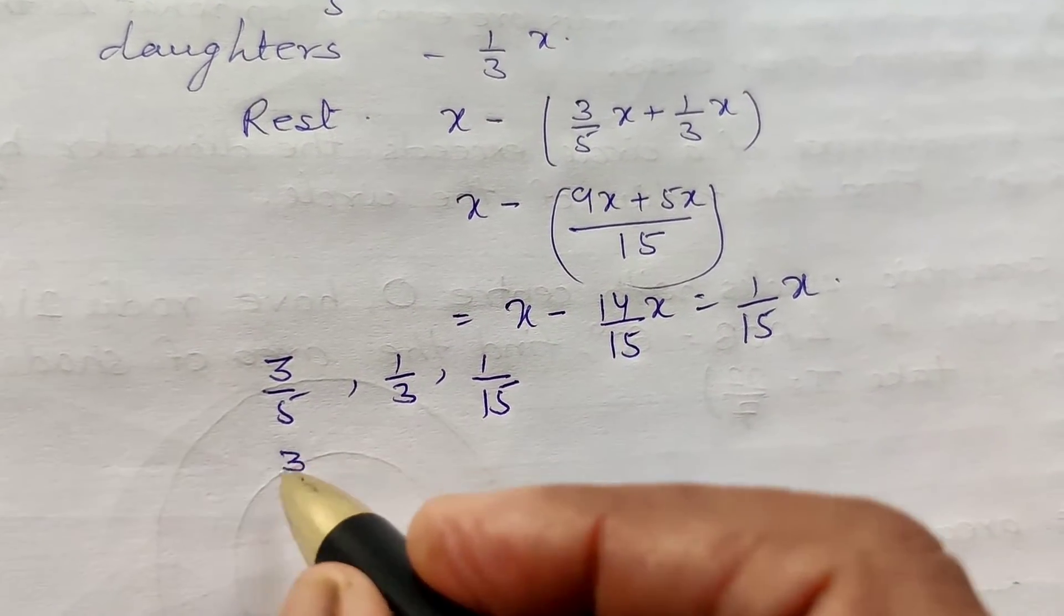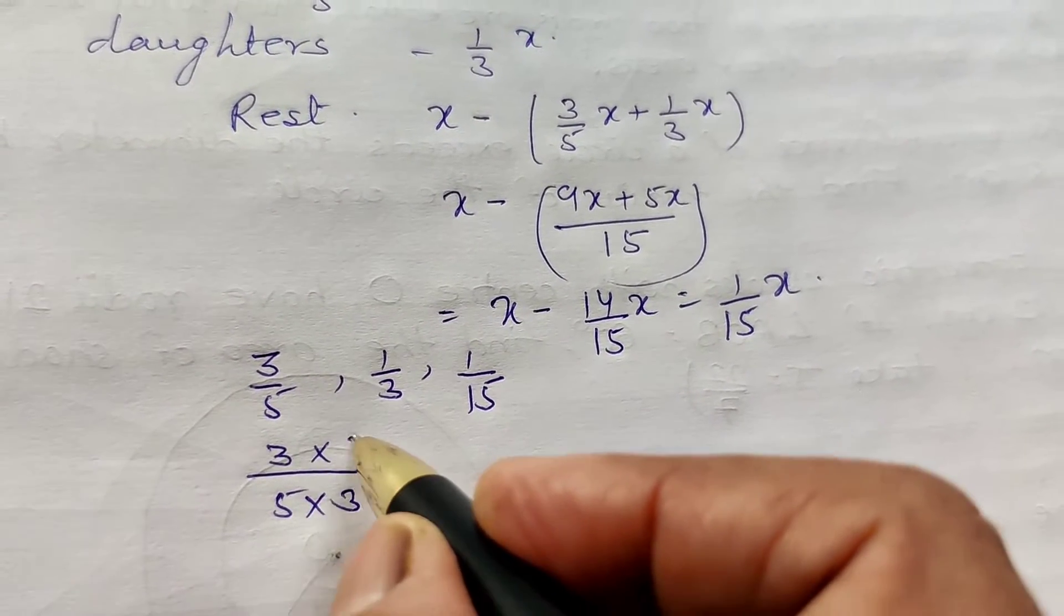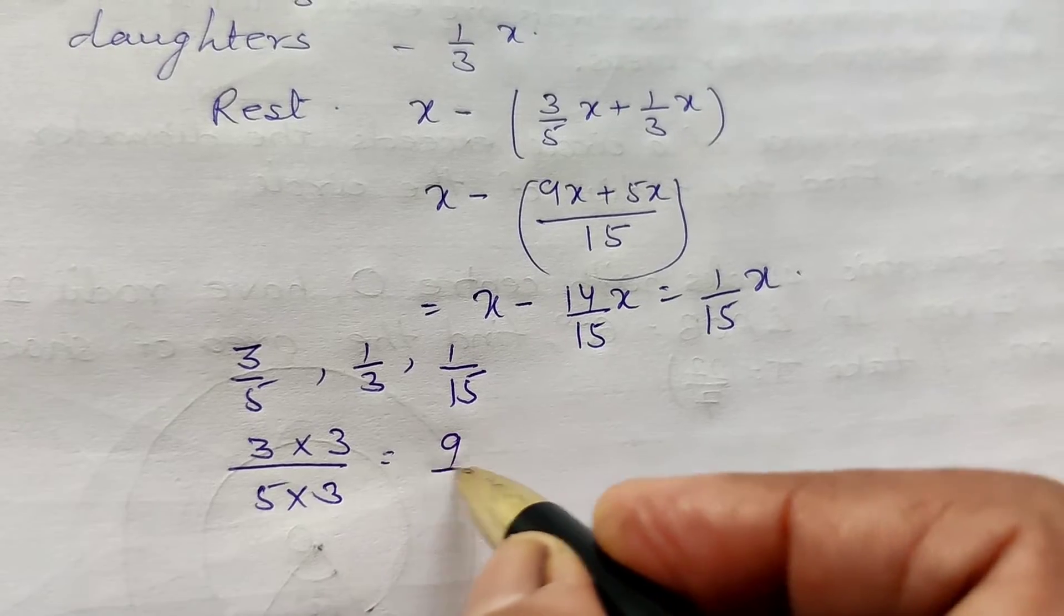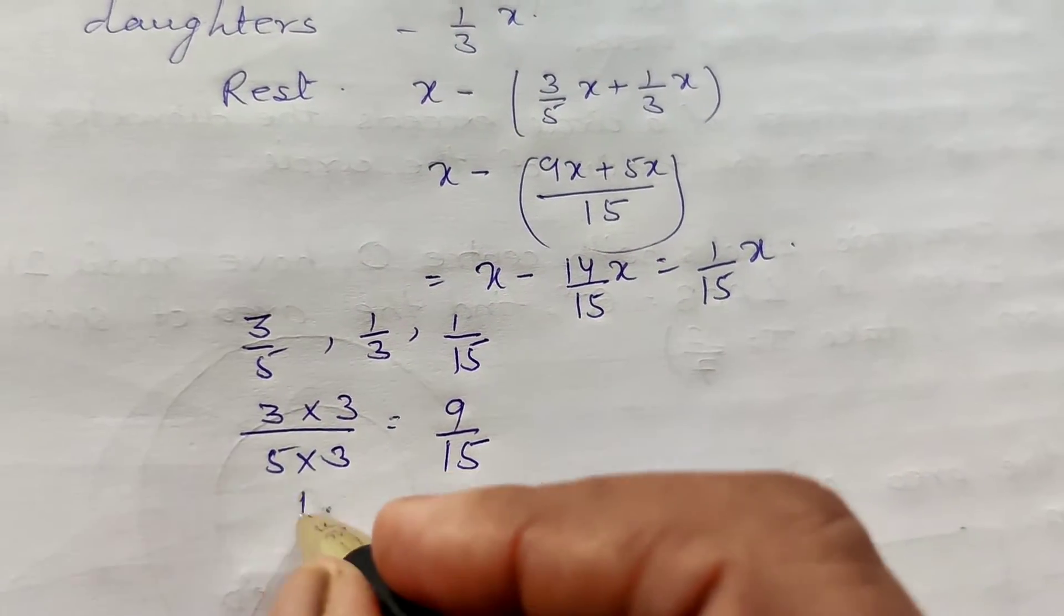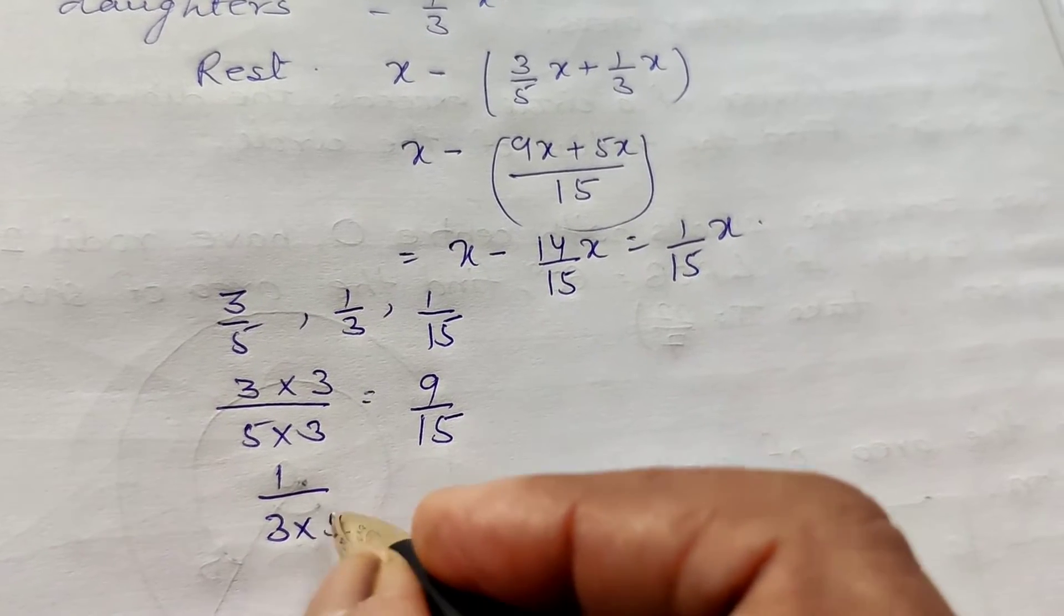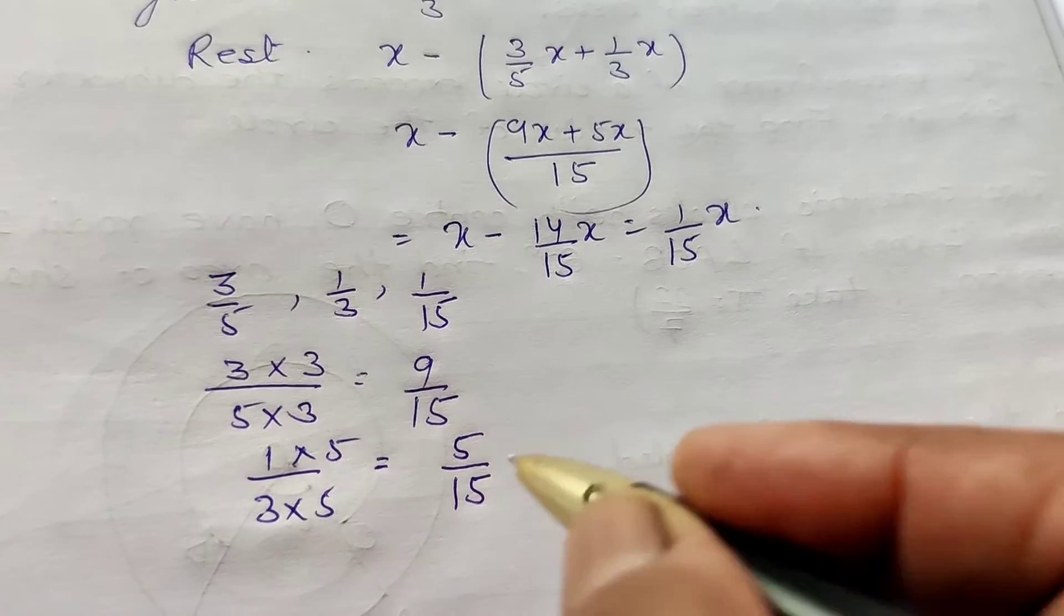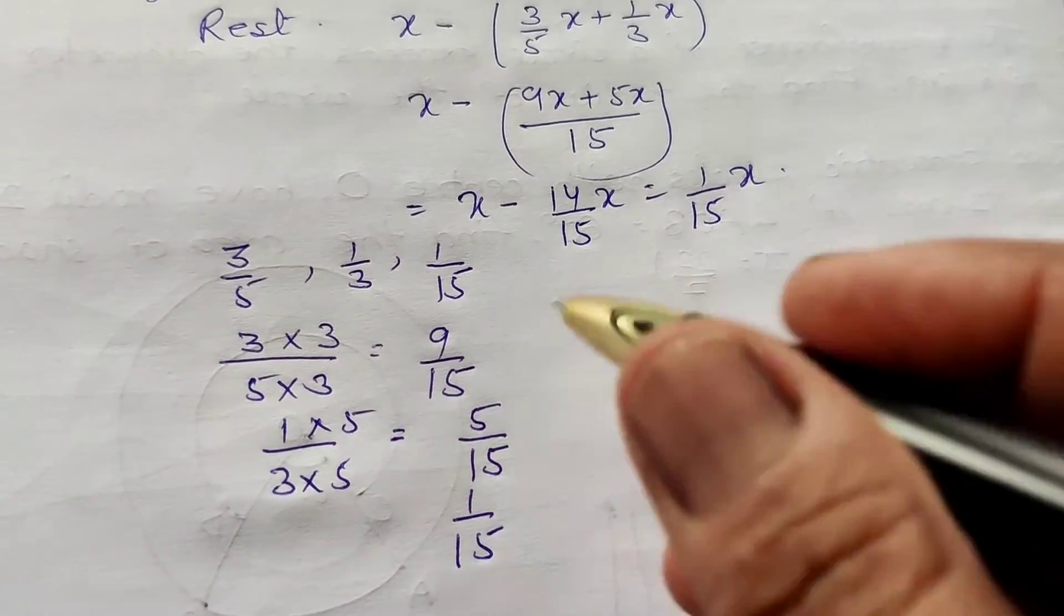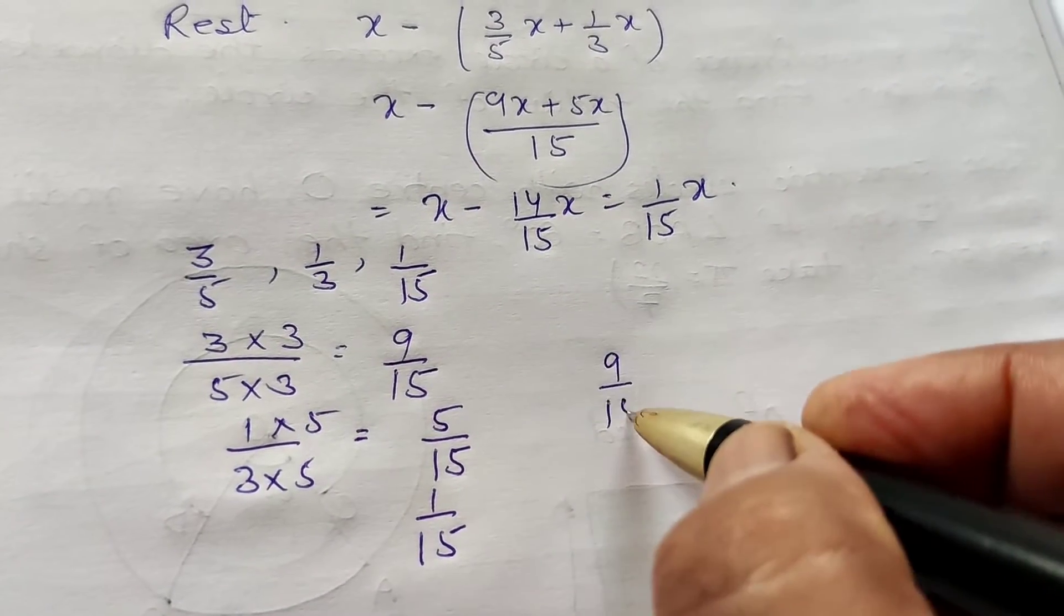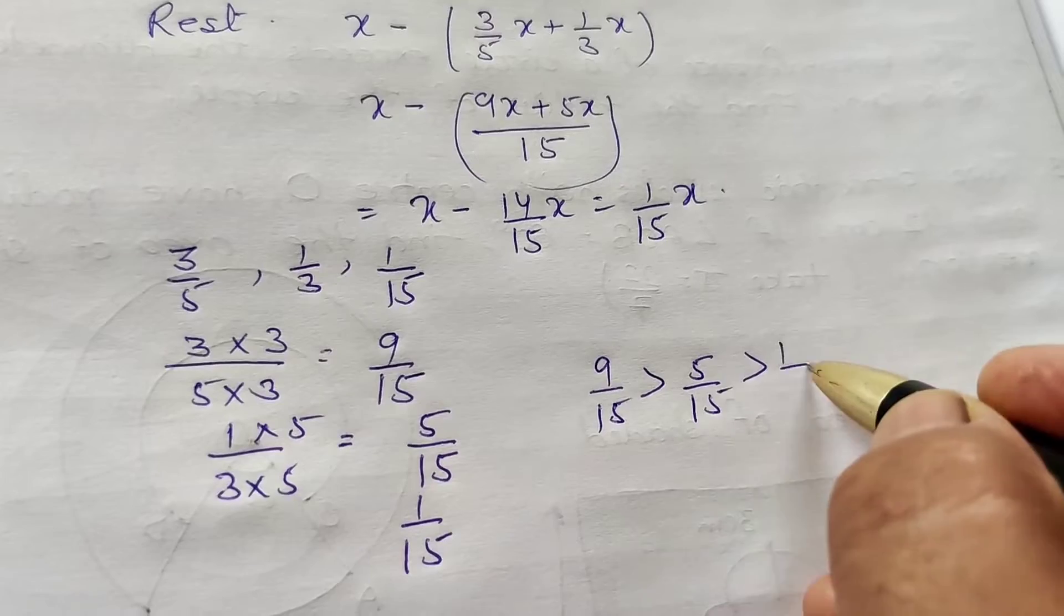Now first change their denominator. Make their equal denominator. It is 9/15, and 1/3 multiplied by 5, it is equal to 5/15, and third one is 1/15. Which one is more? 9/15 is greater than 5/15 greater than 1/15.